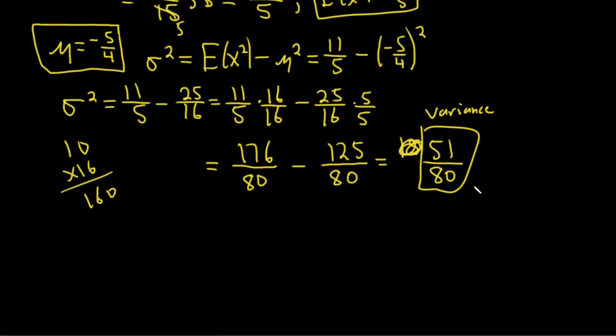151 is 3 times 17, so we can't simplify further. The standard deviation is the square root of the variance, which is the square root of 151 over 80.